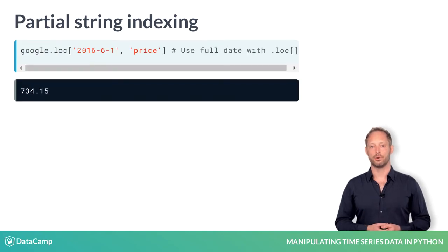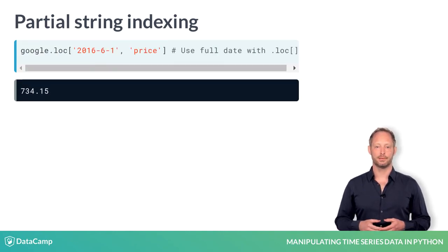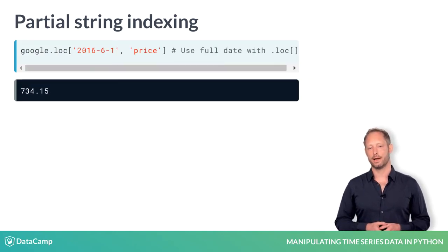You can also use .loc with the complete date and the column label to select a specific stock price.